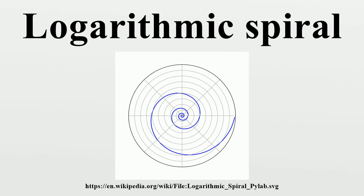In parametric form, the curve is x = r cos(θ), y = r sin(θ) with real numbers, and the spiral has the property that the angle phi between the tangent and radial line at the point is constant.